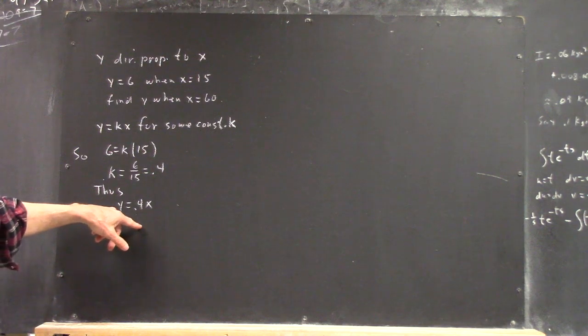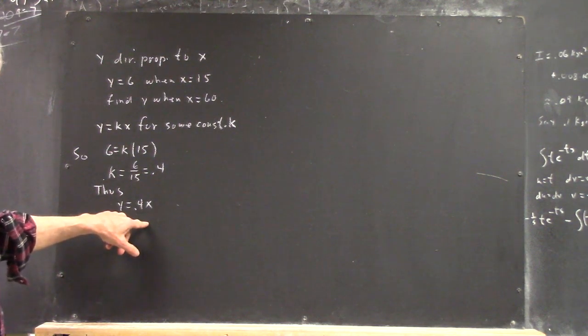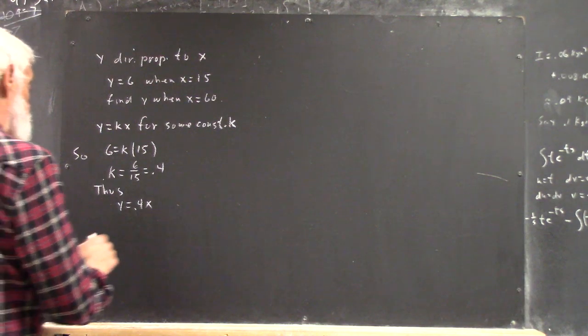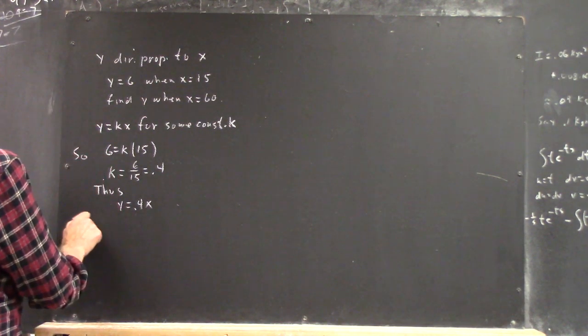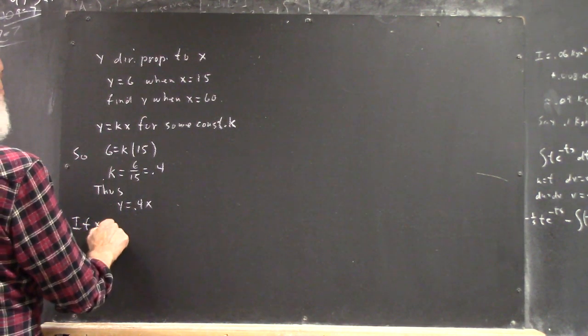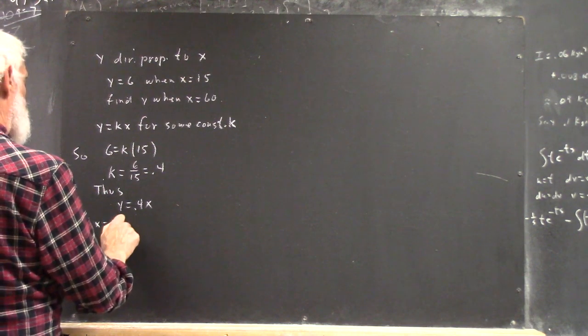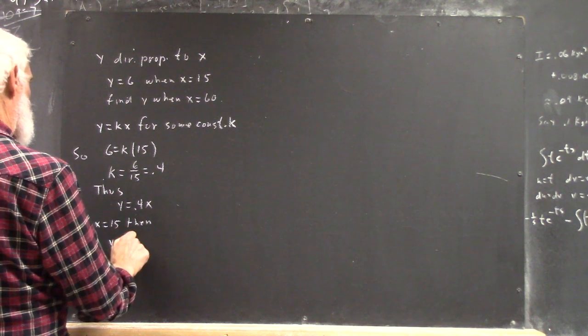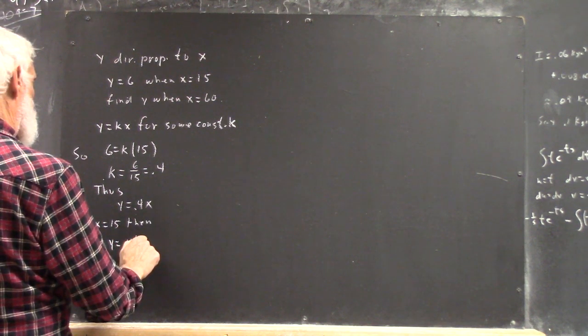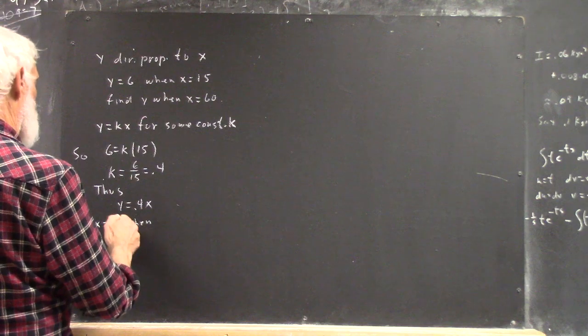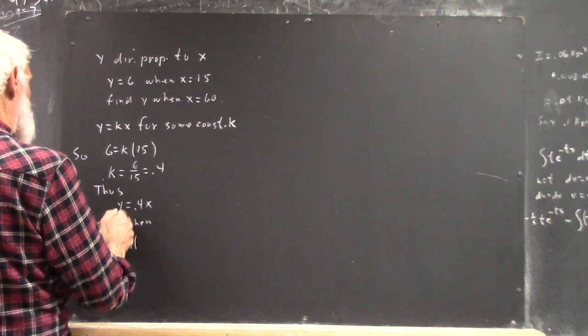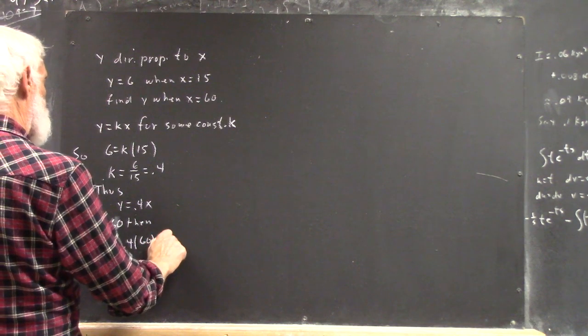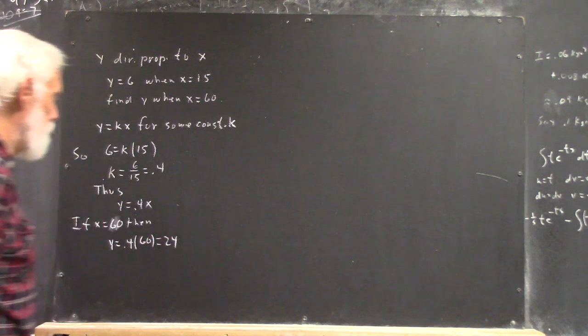K is constant, so it's always the same. No matter what y and x are, k is 0.4. If x equals 15... Now, if x equals 60, sorry. Y is 0.4 times 60, which is 24.